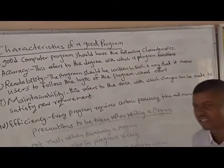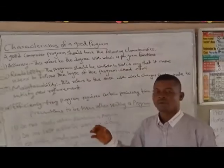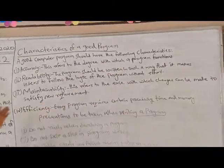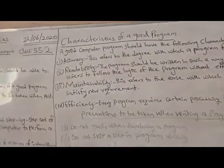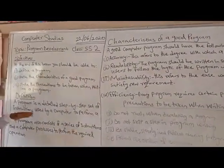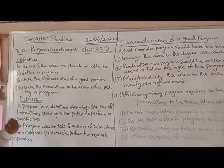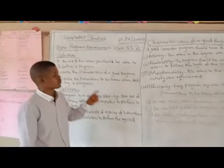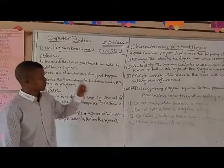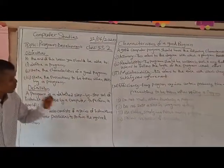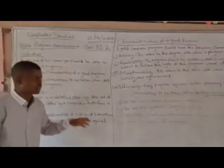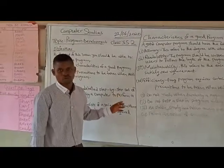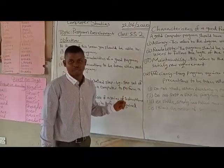At the end of today's lesson, I want you to revise this. To summarize: a program is a step-by-step set of instructions used by a computer to perform a specific task. A good program must have the following characteristics: it must be accurate, readable, maintainable, and efficient. We will continue from there. Goodbye for now. Thank you.